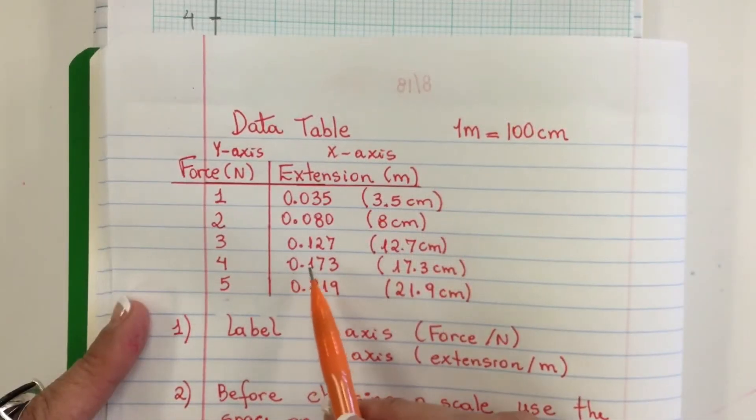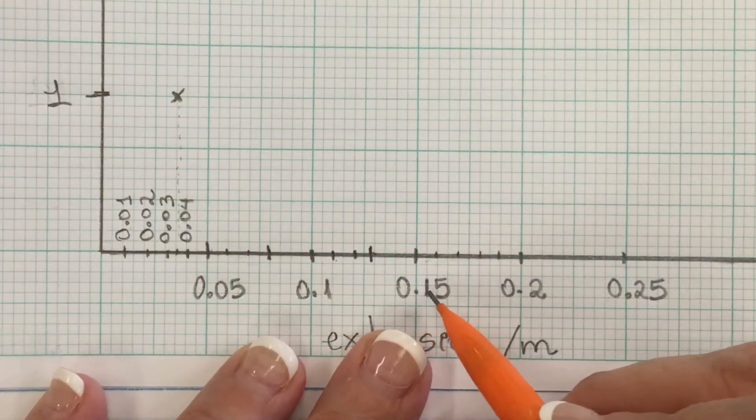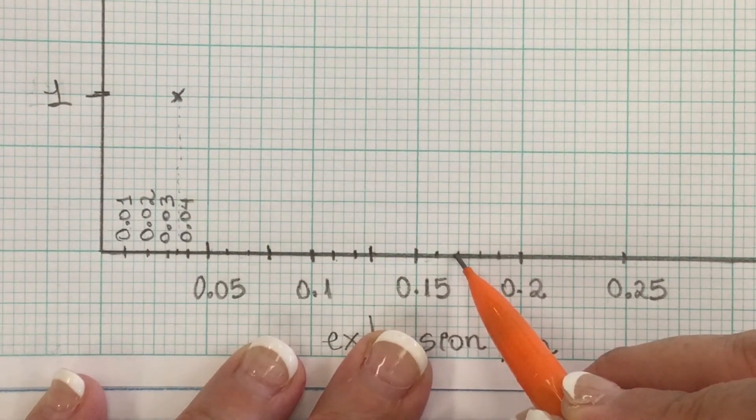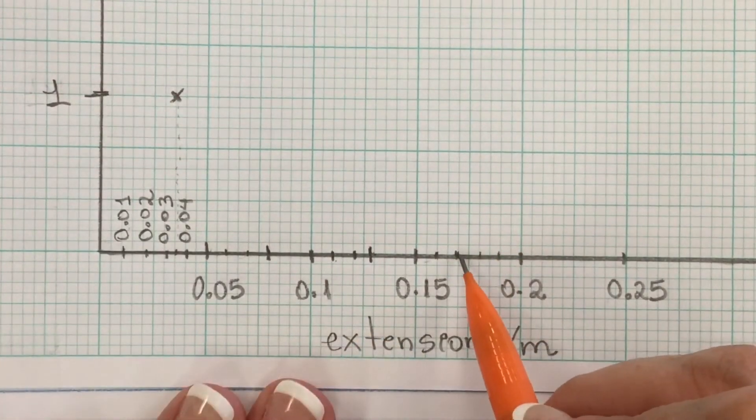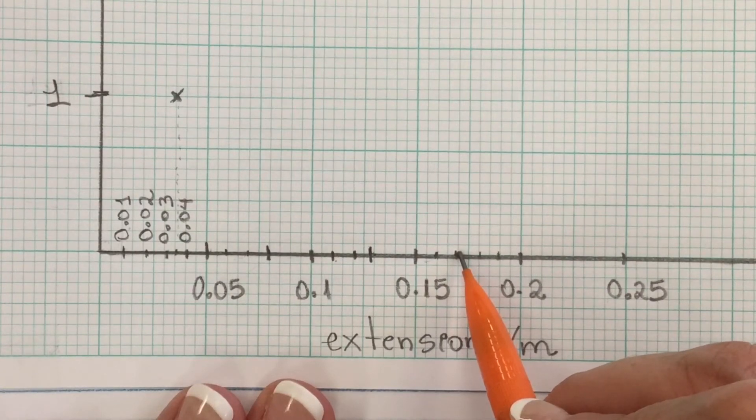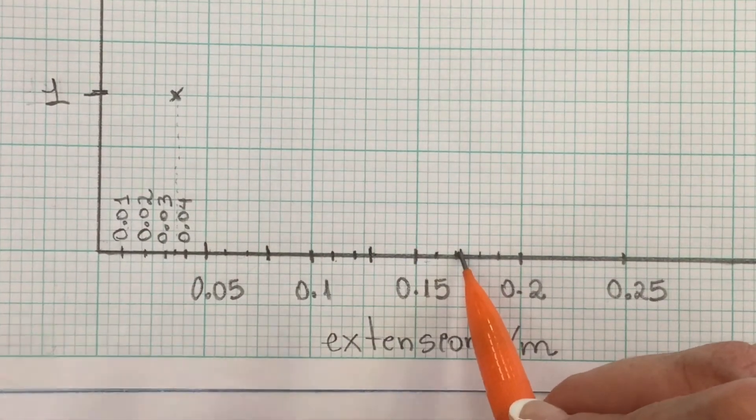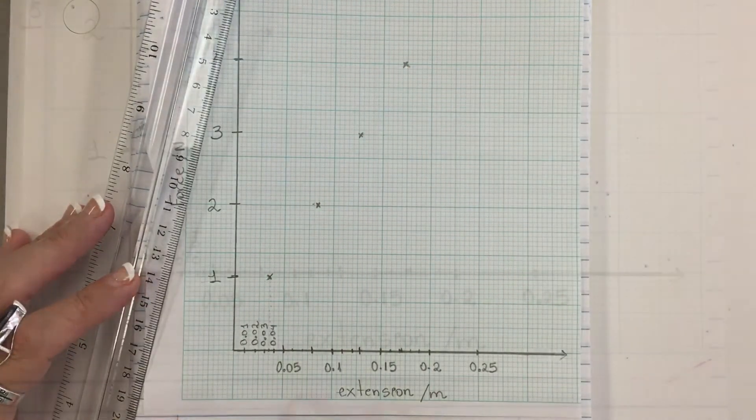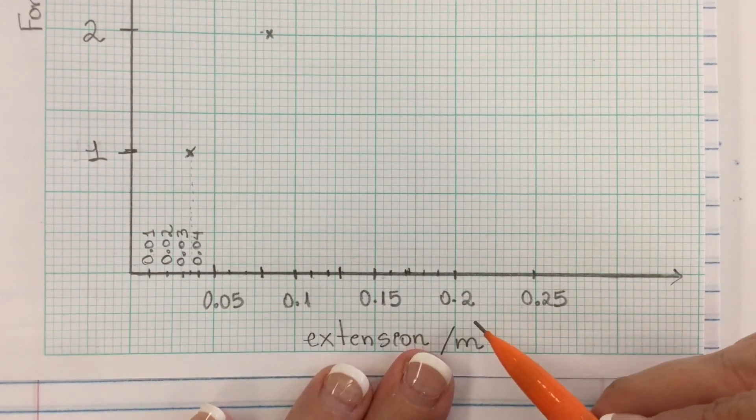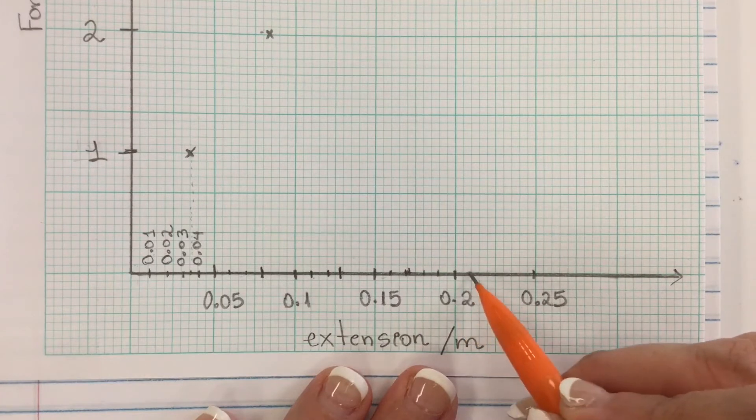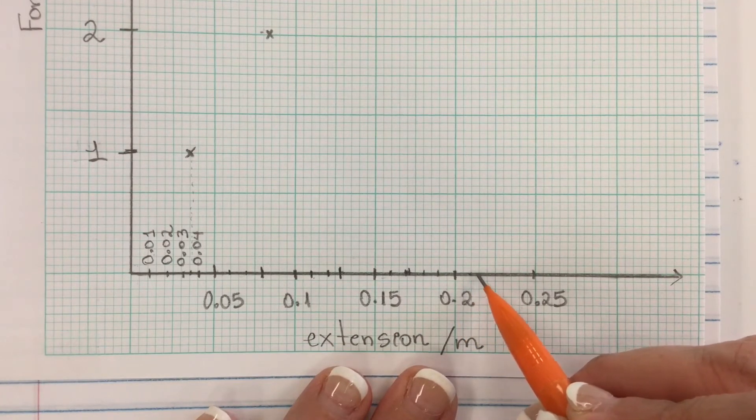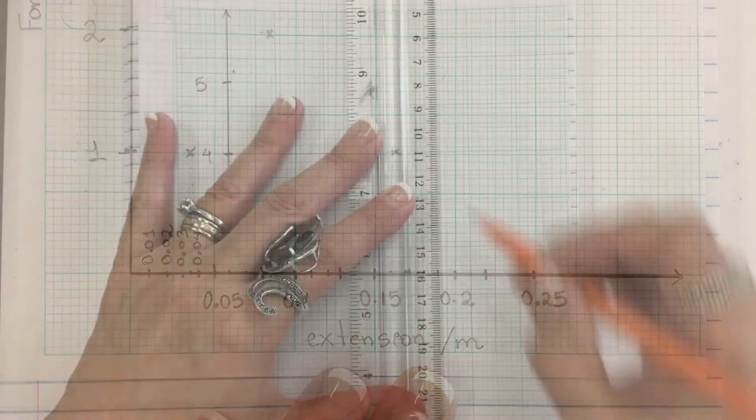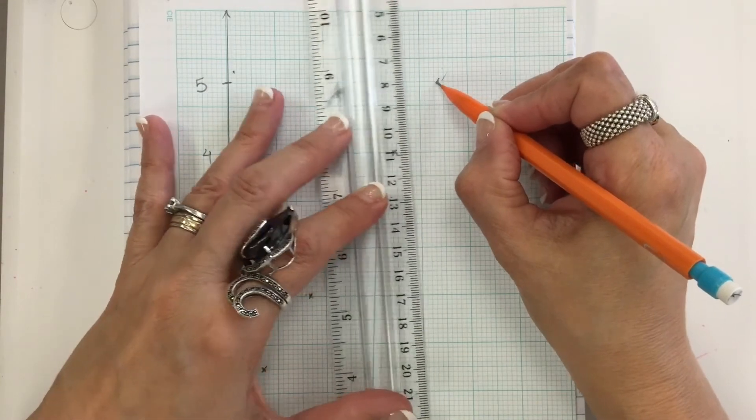My next number is 0.173, so 0.15, here will be 0.16, this is 0.17. So it will be right a little bit after 0.173, right here. And that will correspond with 4. Next is 0.219, so this is 0.21, and 0.219 will be almost 0.22, so that is what I'm looking for. Then I connect with my last one, which is 5.